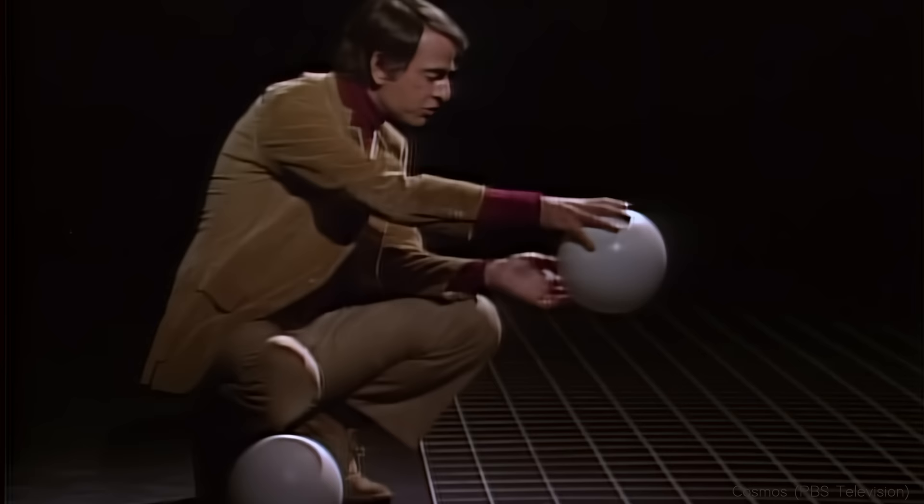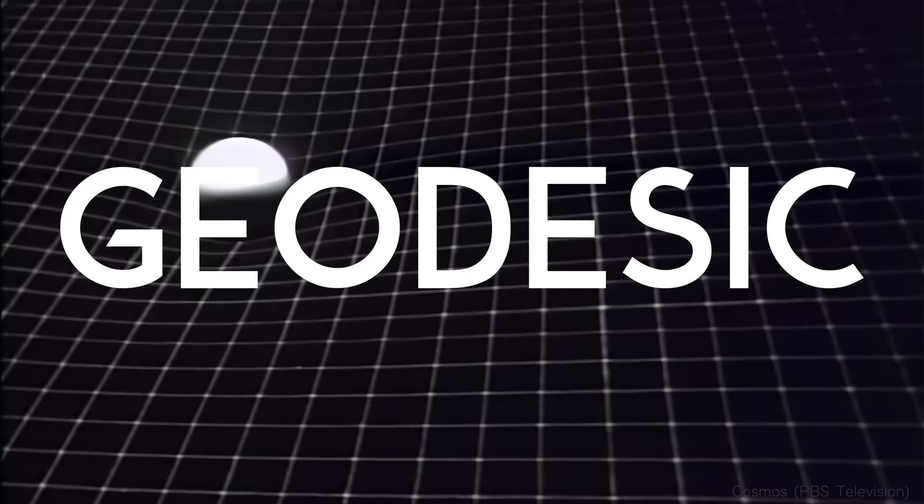How does a black hole trap light? If I throw a ball into the air, it falls back down to Earth due to gravity following a curve. Or at least to me, it looks like a curve. But really, the ball is following the shortest line, also called a geodesic. And it's space-time that's truly curved.